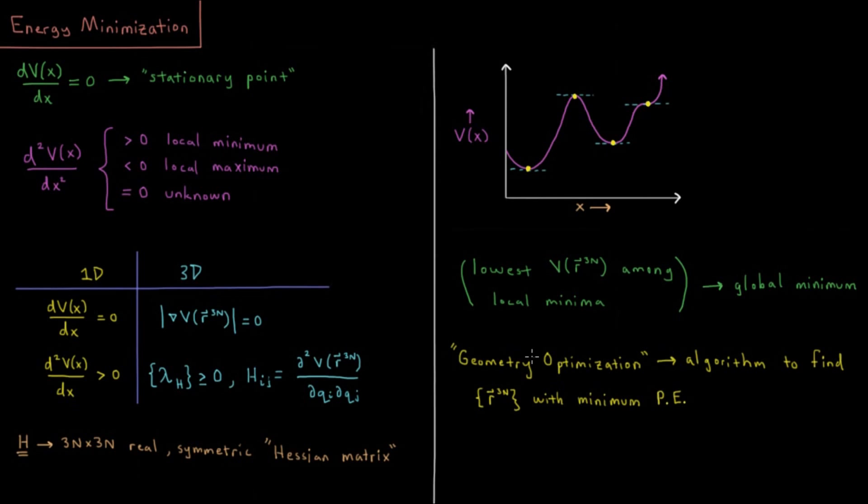So the procedure, which we call geometry optimization, is basically to use an algorithm which is usually coded up in some computer program to find all of the coordinates of the molecule with the minimum potential energy.